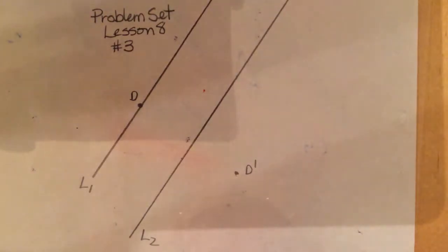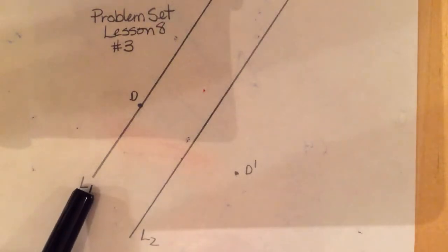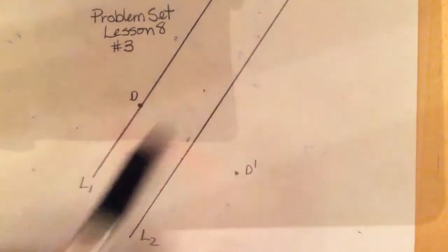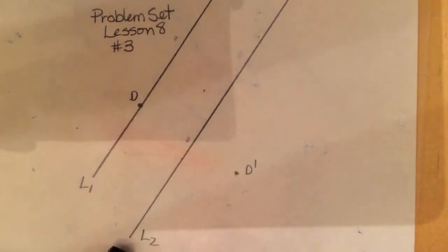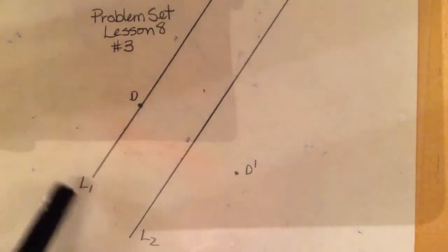Hi, I wanted to do a little explanation of Problem Set Lesson 8, number 3, and this is Sequences of Reflections. So it's a sequence of two reflections, and they said there's a reflection across L1, line 1 here, and then a reflection across L2, and these lines are parallel to one another, and that's important.